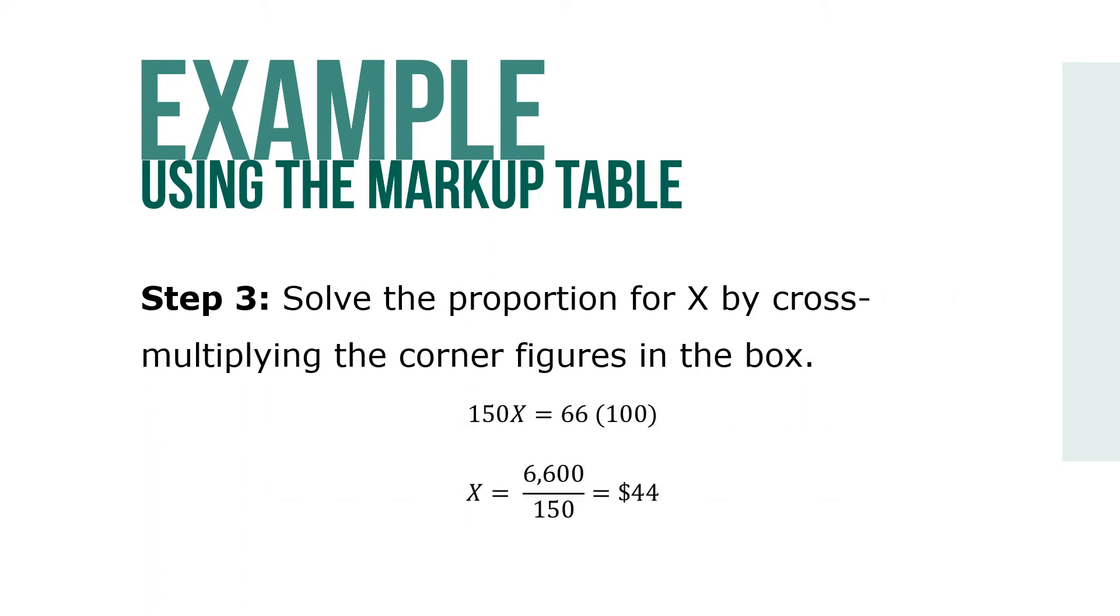Solve for the proportion of X by cross-multiplying the corner figures in the box. 150X equals 66 times 100. So X equals 6600 over 150, which equals $44.